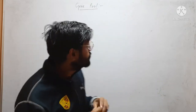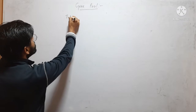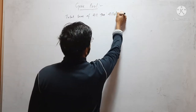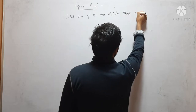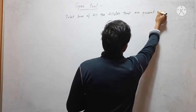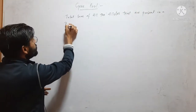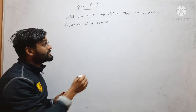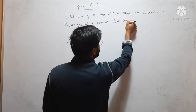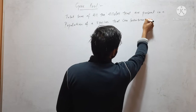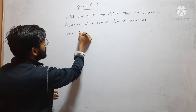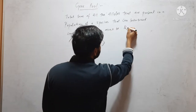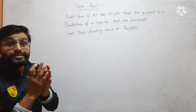Gene pool is the total sum of all the alleles that are present in a population of a species that can interbreed, and their breeding must be random. This is called gene pool.